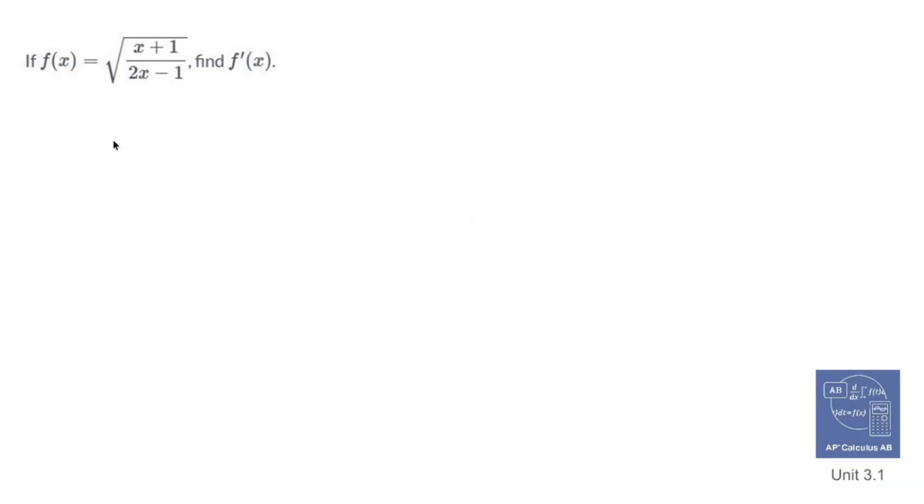All right, we've reached our nightmare scenario for chain rule. So let's remind ourselves what chain rule is. You're gonna have some type of stuff on the outside and some type of stuff on the inside. The chain rule says take the derivative of the outside stuff, keep the inside stuff the way it is, but then multiply everything by the derivative of the inside stuff.